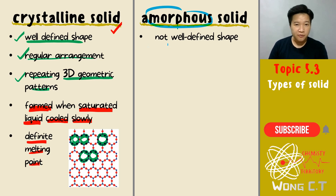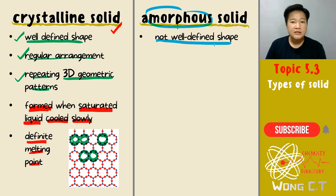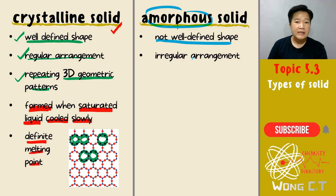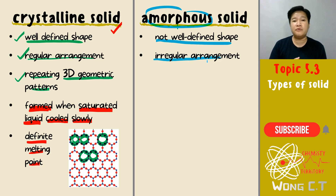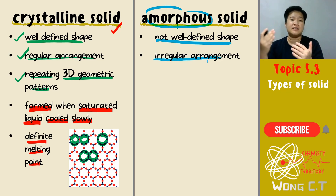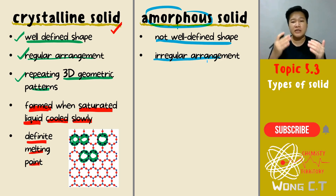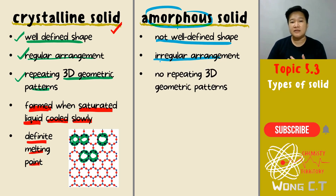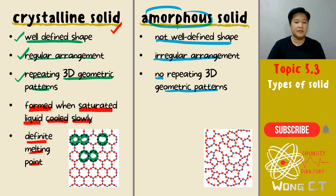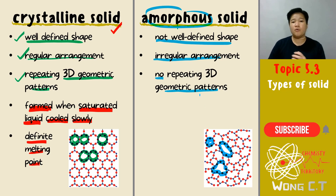Next, how about amorphous solid? First and foremost, it does not have a well-defined shape — the shape will not be well-defined. Therefore you will have an irregular arrangement; the arrangement won't be repeated, it will be different every single time. That is your irregular arrangement, and when it's an irregular arrangement you won't repeat the geometric pattern. You can see the arrangement here is different from the arrangement there.